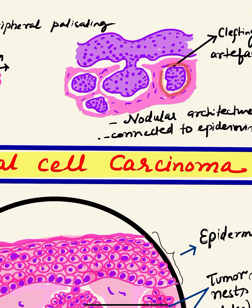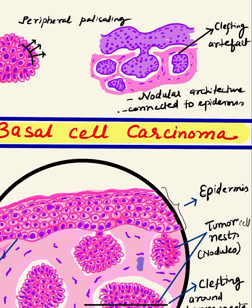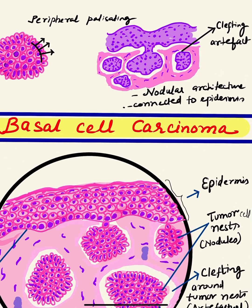We have to draw a peritumoral clear area around these tumor nests. This is an artifact seen during tissue processing in BCC sections. Between the stroma and the tumor nests there is a clear space called the clefting artifact. This clefting artifact is very characteristic of BCC and helps in differentiating it from its close differential diagnosis, such as trichoepithelioma.